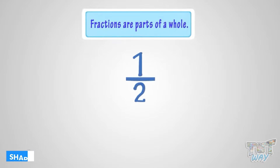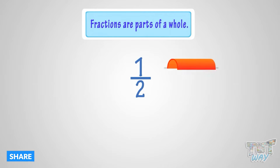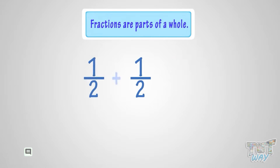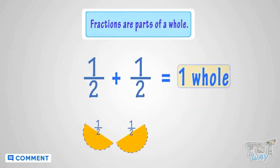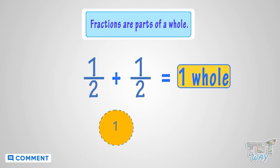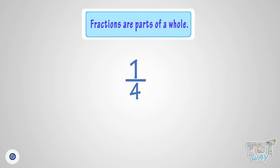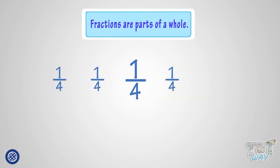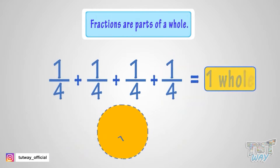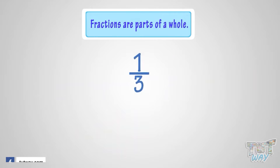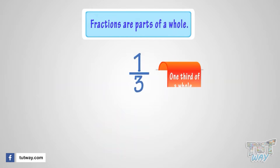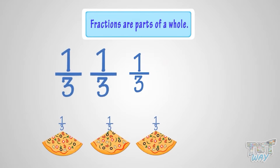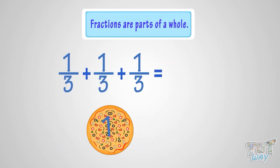Like one by two is half of a whole and two halves make one whole. One by four is a quarter of a whole and four quarters make one whole. One by three is one-third of a whole and three one-thirds make one whole.